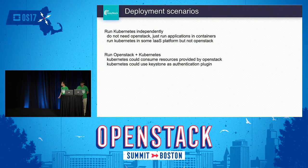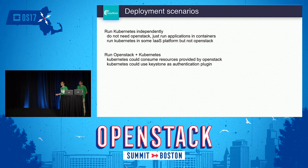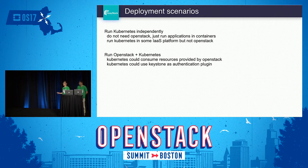As we know, OpenStack provides infrastructure resources like Nova VMs, network, and volumes. Kubernetes is a system for automating deployment, management, and scaling of containerized applications. We have different scenarios based on different requirements — we can deploy Kubernetes independently, or run OpenStack and Kubernetes together.